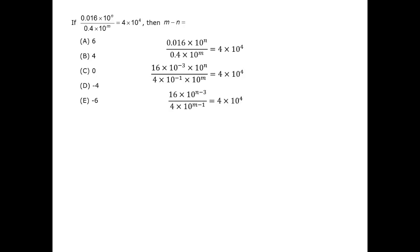Now we have 16 over 4 on the left side, which is 4, and we have a 4 on the right side, so those 4s drop out. On the left side now, we have a fraction with exponents that have the same base. In this case, the exponents subtract.